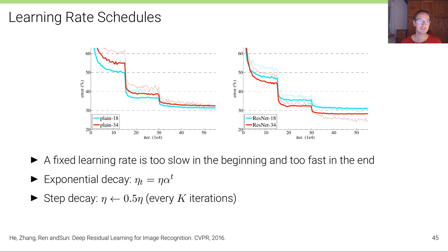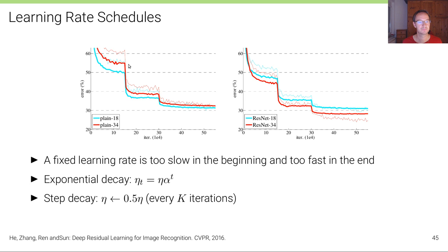It's also important how to set the learning rate. A fixed learning rate is typically too slow at the beginning and too fast toward the end. Typical learning rate schedules start with a high learning rate and reduce it during training. Methods include exponential decay or stepping down the learning rate every k iterations. You can observe that at a fixed learning rate the error stops decreasing, but when the rate is reduced there's a steep drop in error — so tempering the learning rate appropriately has a real impact.